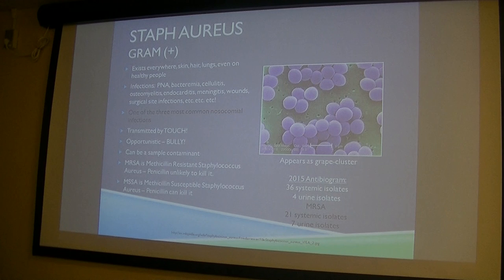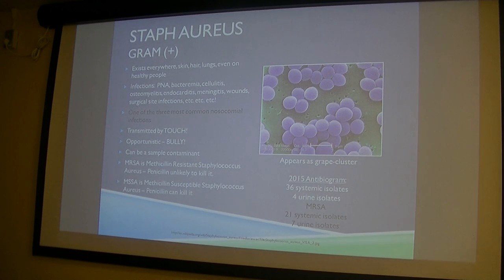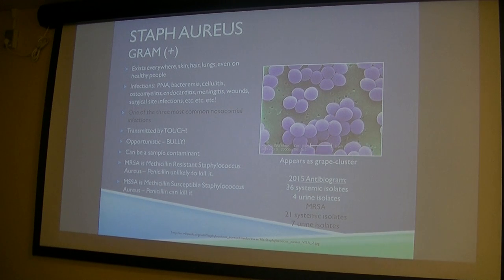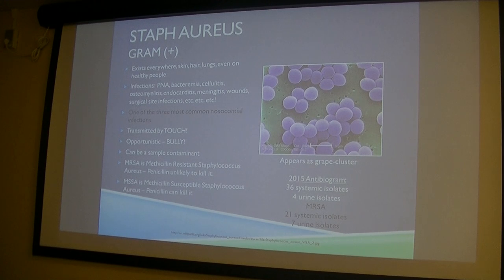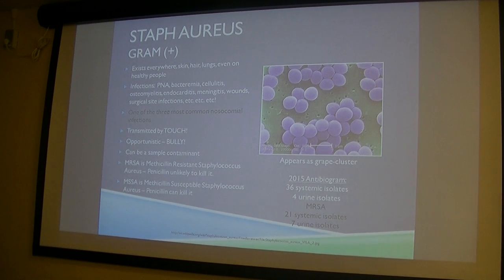Here are our top gram-positive bacteria. In 2015 we had 36 systemic isolates of Staph aureus and 4 urine isolates. MRSA falls under this same category — 21 systemic isolates and 7 urine isolates. Staph aureus exists everywhere on your skin, so sometimes you get an opportunistic infection. It causes pneumonia, bacteremia, cellulitis, osteomyelitis, endocarditis, meningitis, wounds, and surgical site infections.